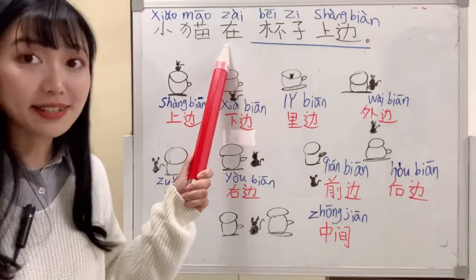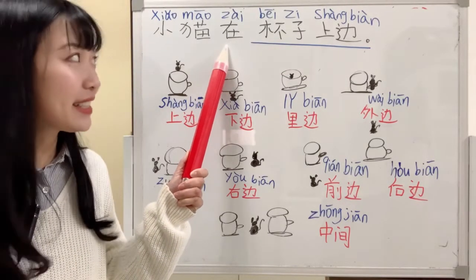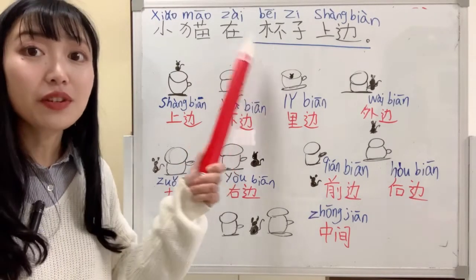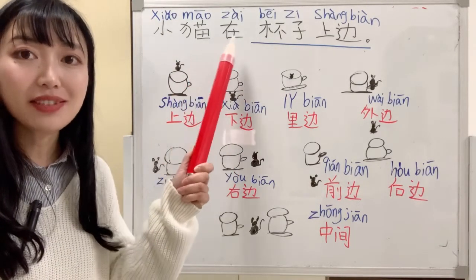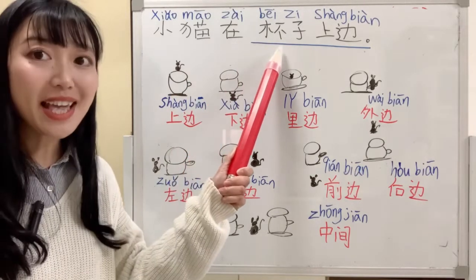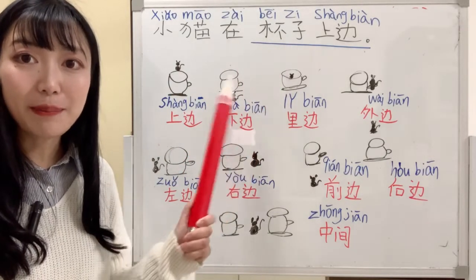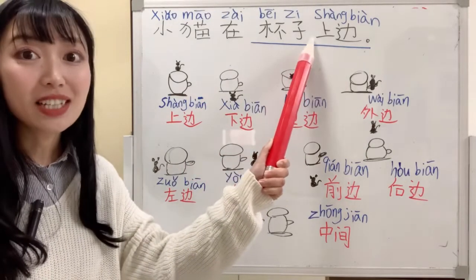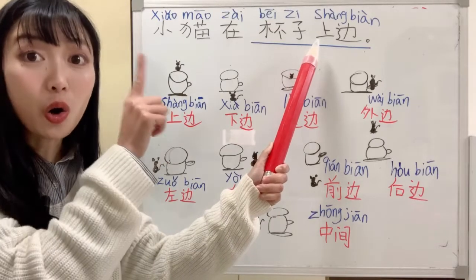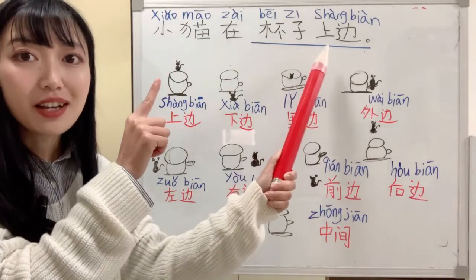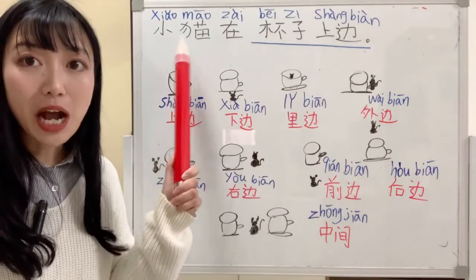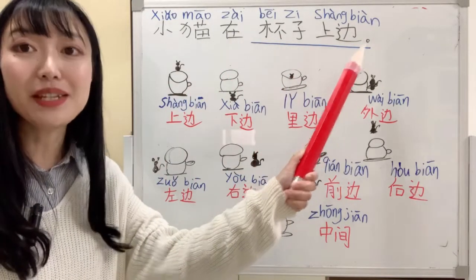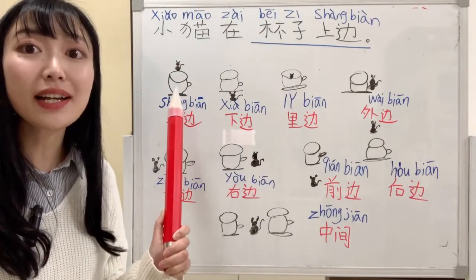在 is a verb. It's like exist. Basically, before the location, we have to say 在. 小猫在. 杯子 means the cup. 上 means up or on. 上边 means on. So 小猫在杯子上边 means the cat is on the cup.